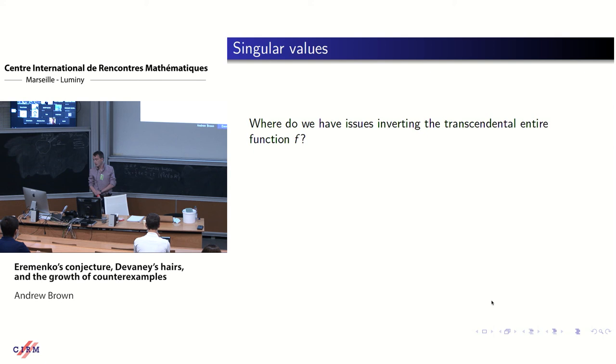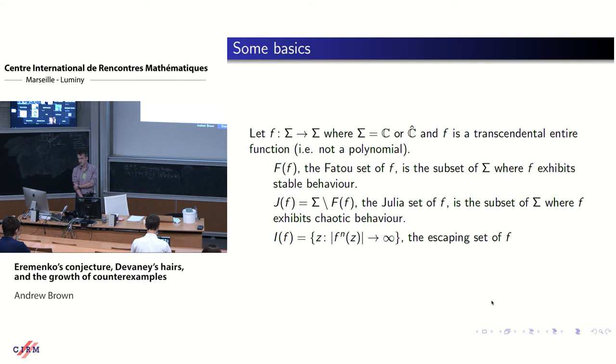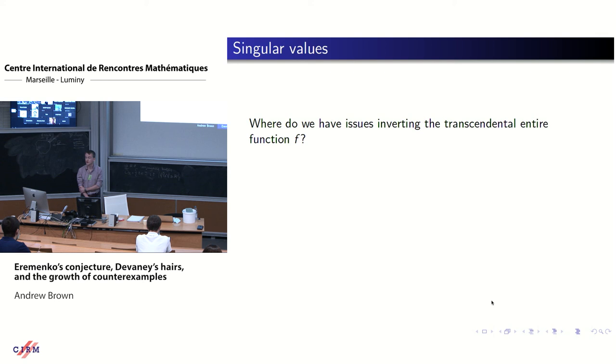I'm just going to be covering basically the same things that everyone else has talked about all day. So for a transcendental entire function, we have stability on the Fatou set, instability or chaos on the Julia set, but more importantly for us with transcendental entire functions, we have the escaping set. And do stop me at any point if you have a question or complaints. For transcendental function, we have questions about where we are allowed to invert and where we can't, because inverting is always helpful and it's a main question.